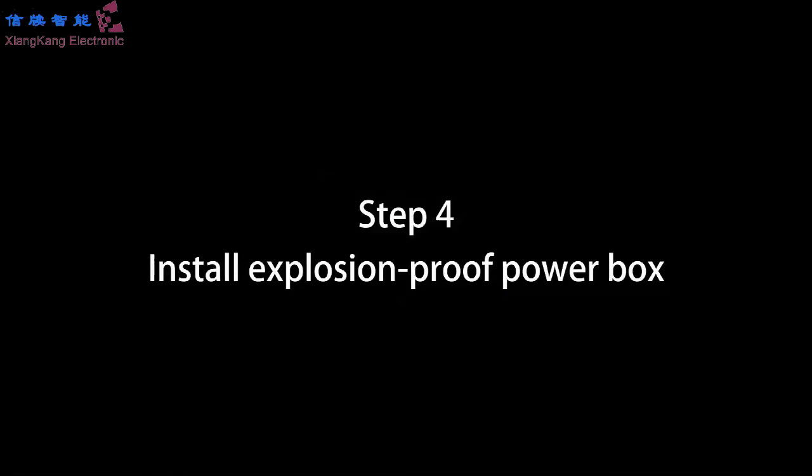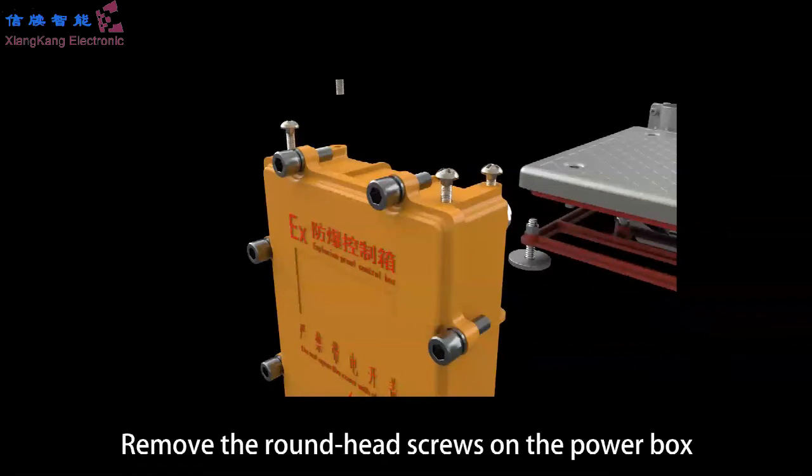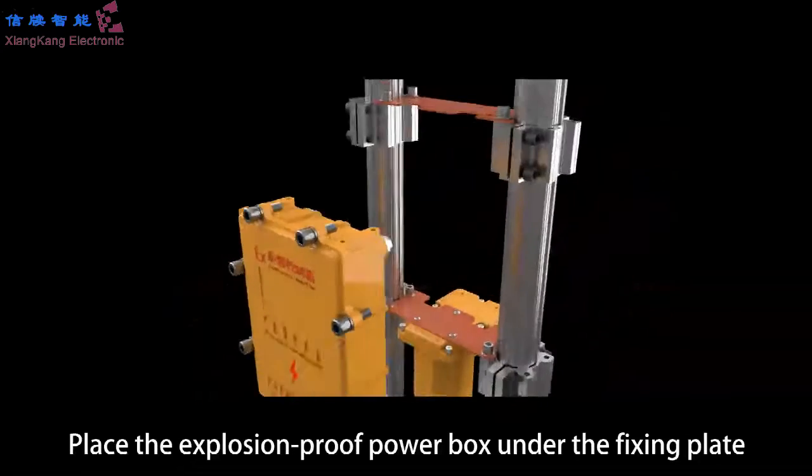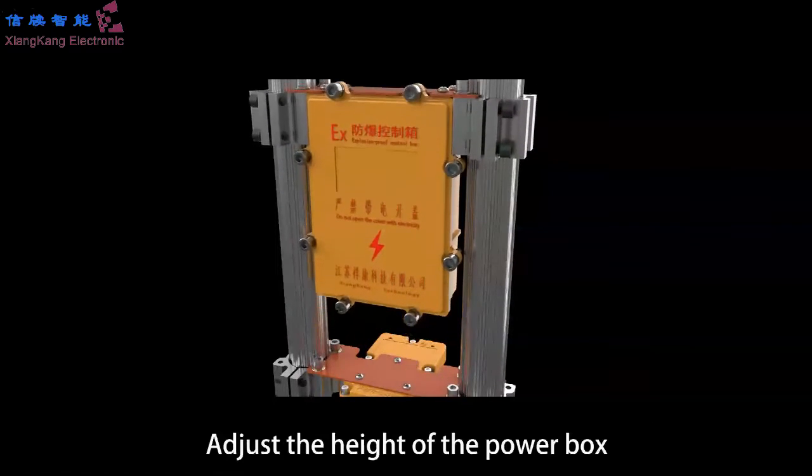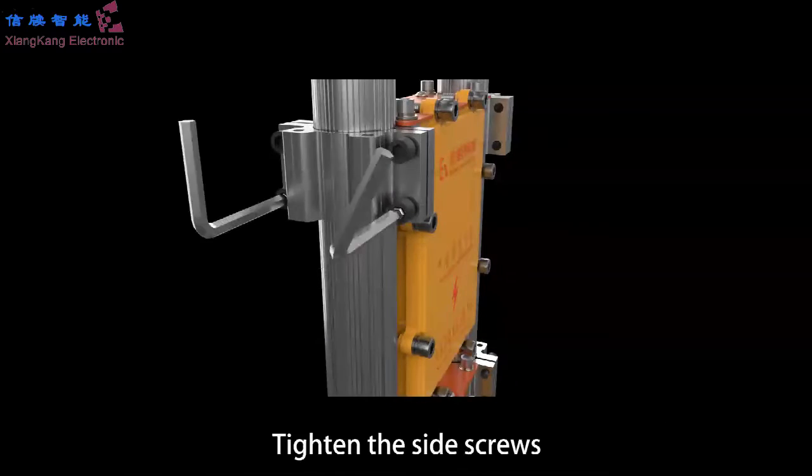Step 4: Install explosion-proof power box. Remove the round-head screws on the power box. Place the explosion-proof power box under the fixing plate. Tighten round-head screws. Adjust the height of the power box. Tighten the side screws.